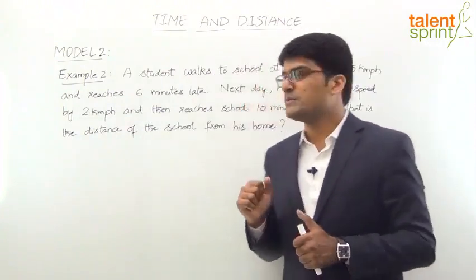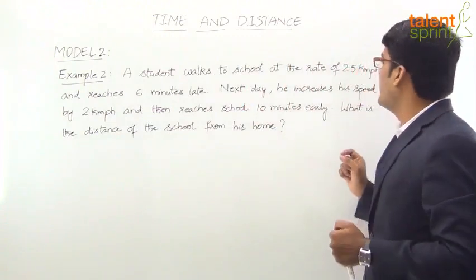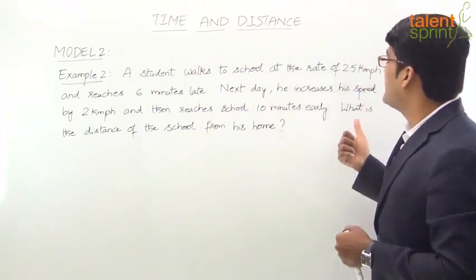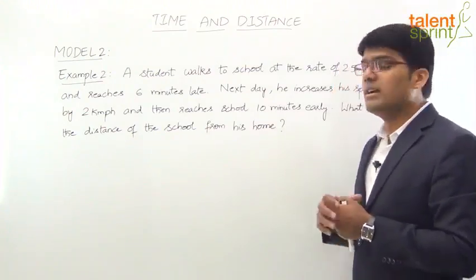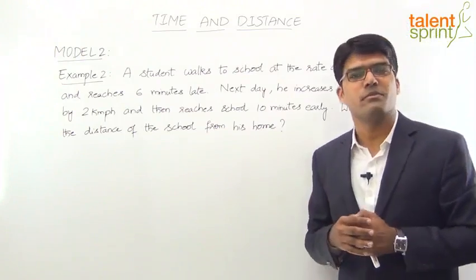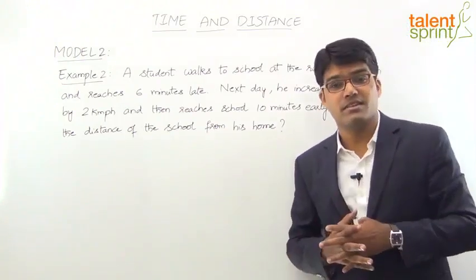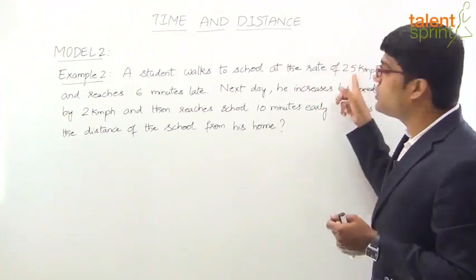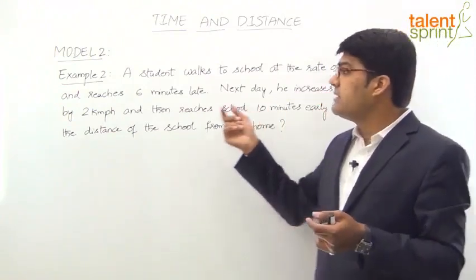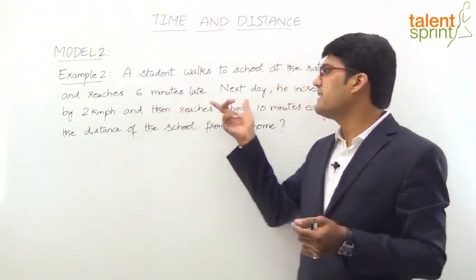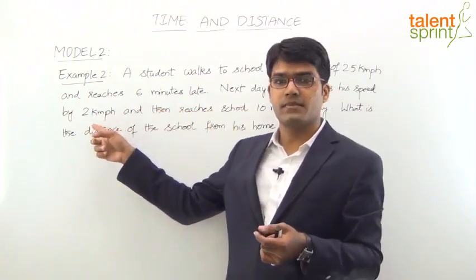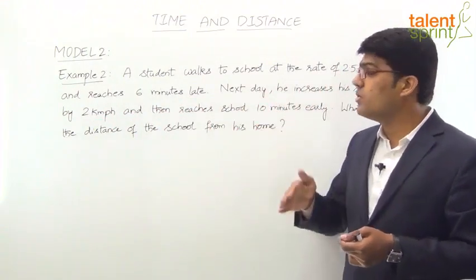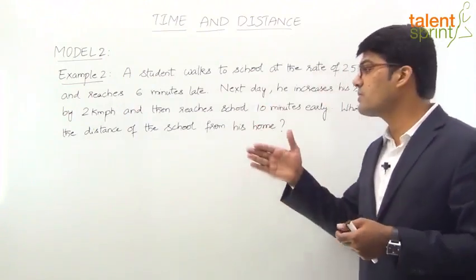Let's discuss Model 2, Example 2. A student walks to school at the rate of 2.5 km per hour and reaches 6 minutes late. The next day, he increases his speed by 2 km per hour and reaches school 10 minutes early. What is the distance of the school from his home?